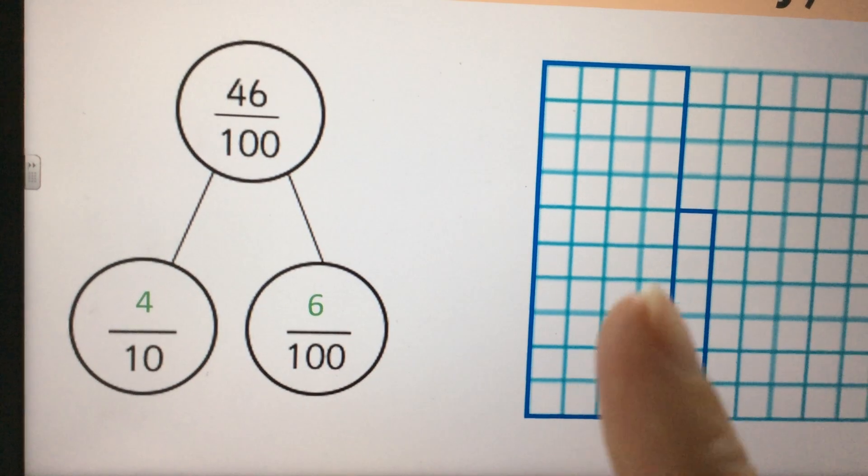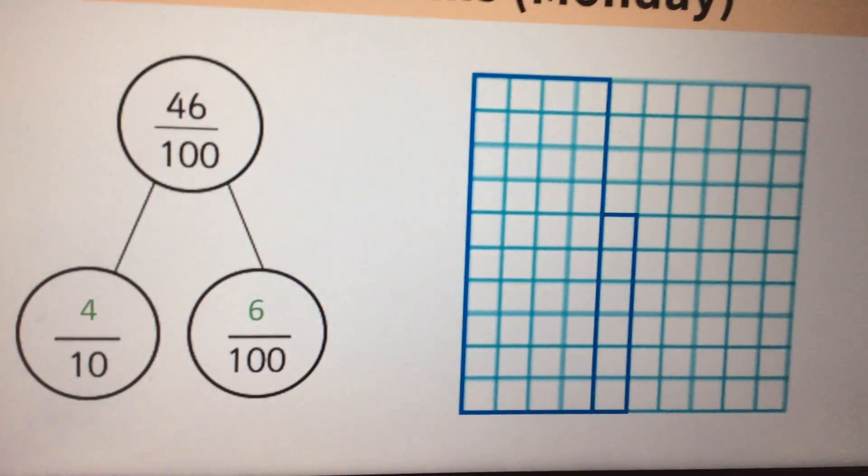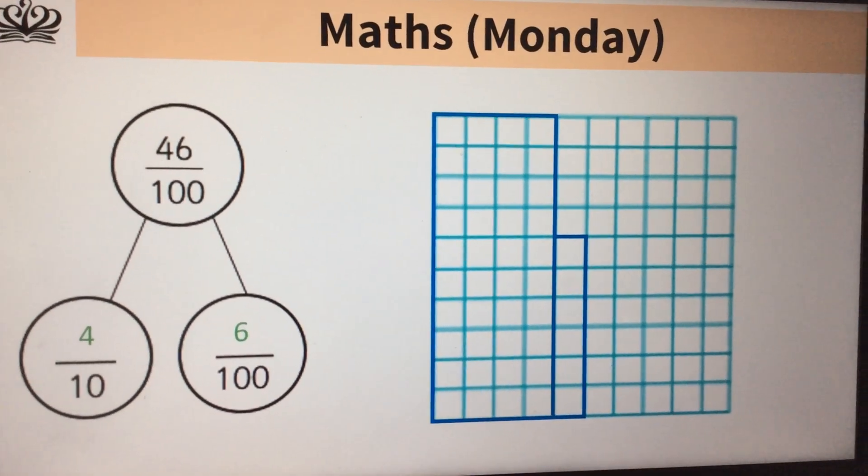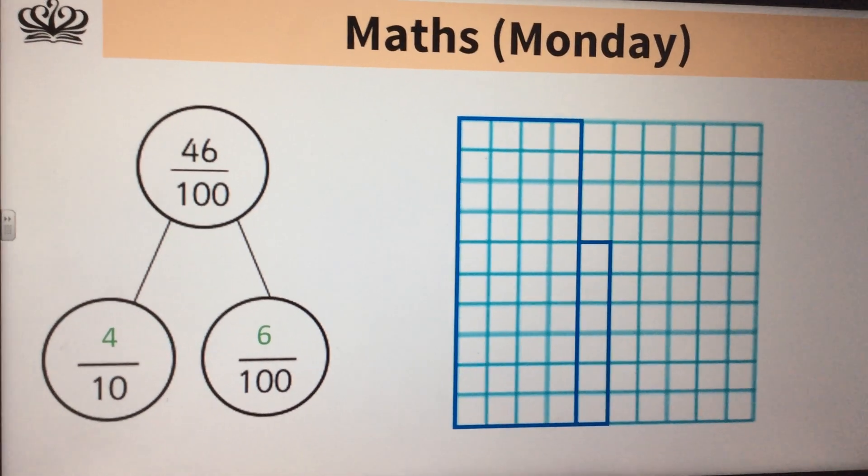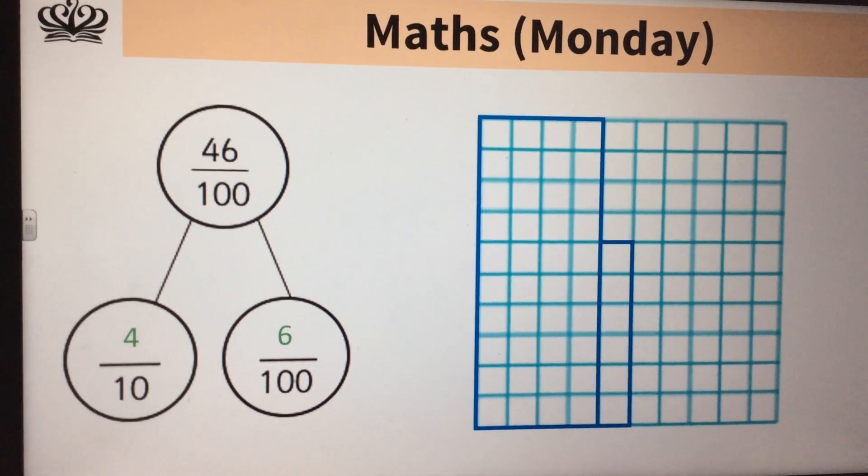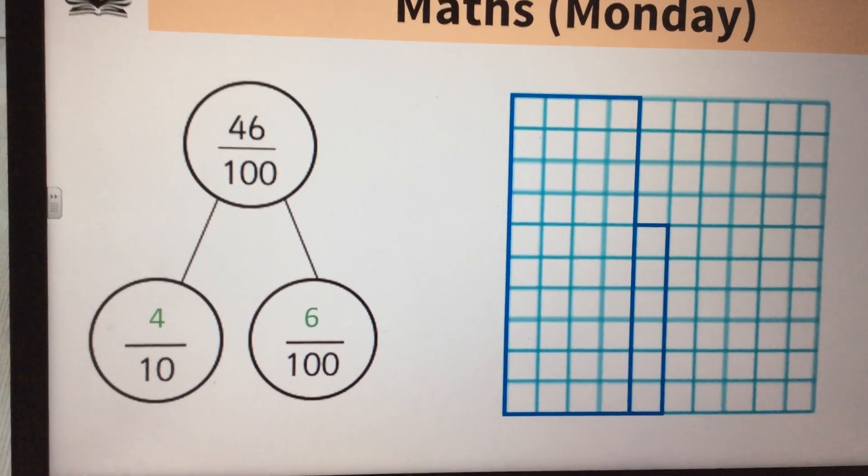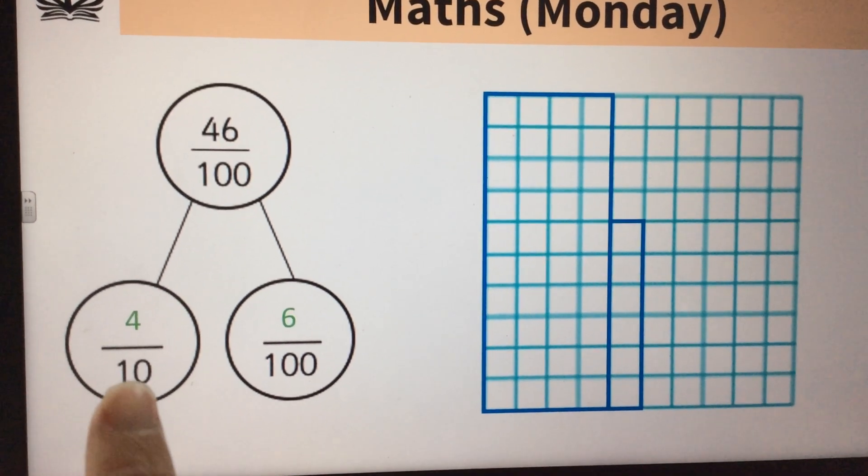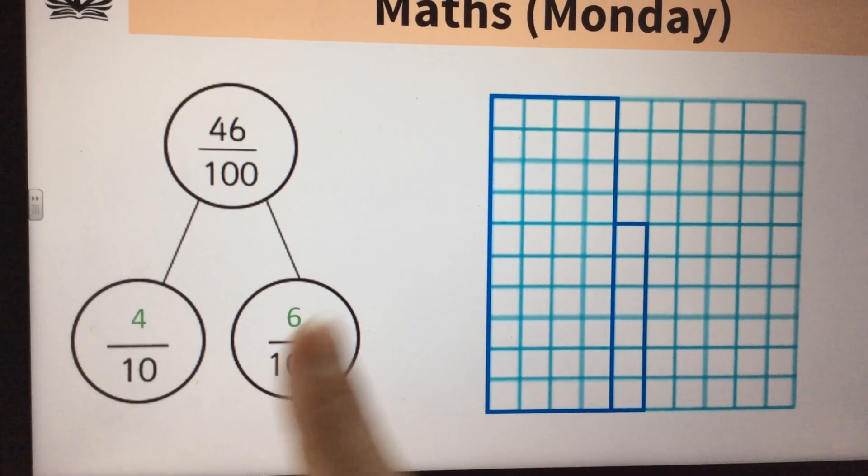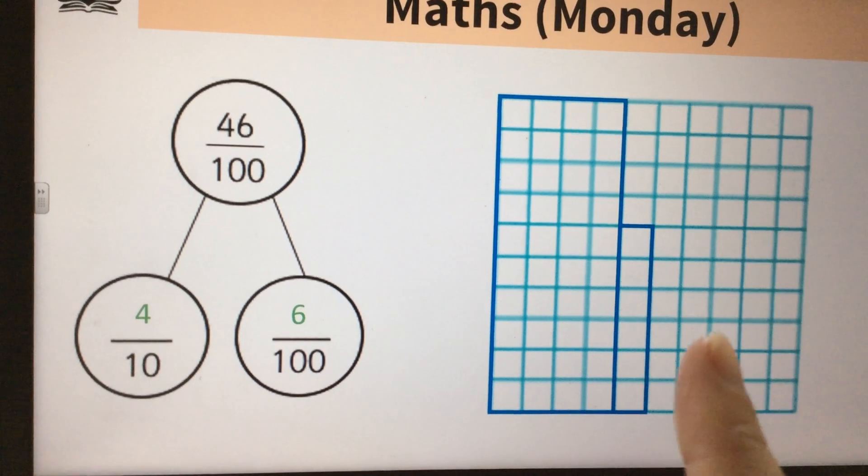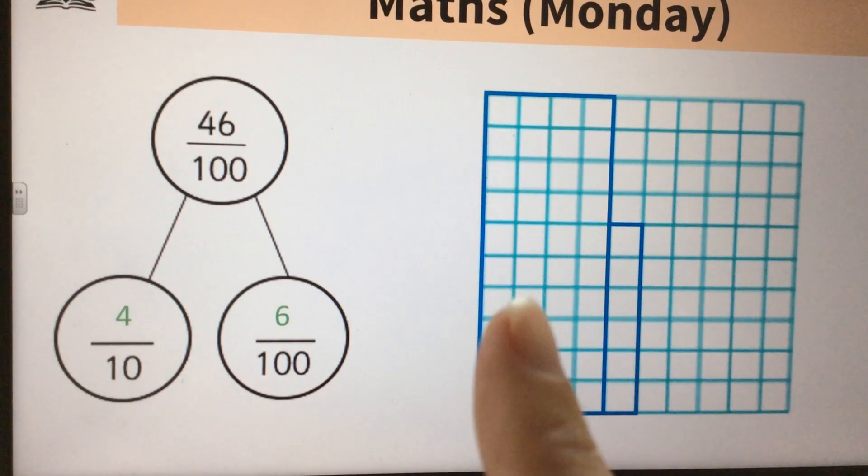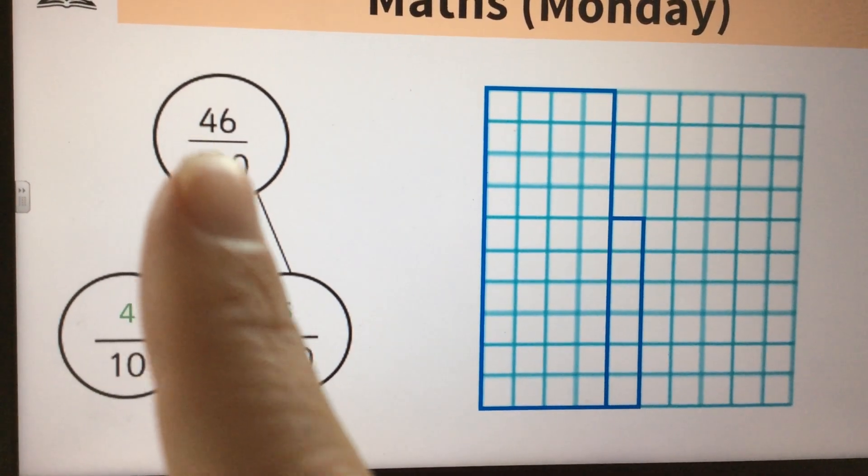Then how many hundredths have we got? We've got our six hundredths. So for some of you, using a hundredth square might really help you to see that. Make sure you're thinking about what was it dividing into, so if it's dividing into ten equal bits, that's ten of those columns or ten of those rows, and four of those would make our forty.